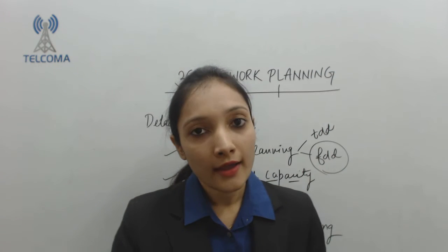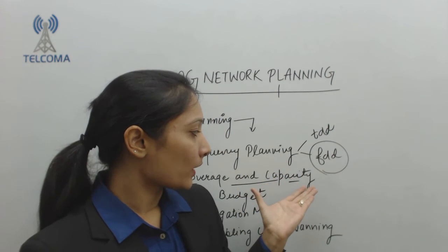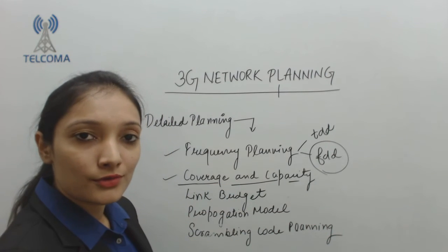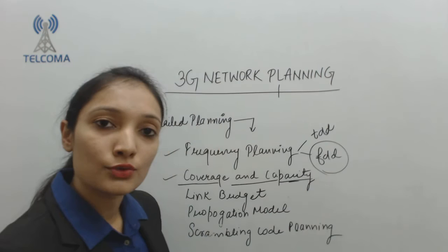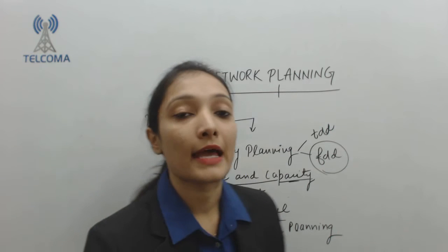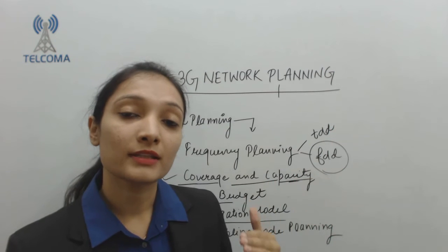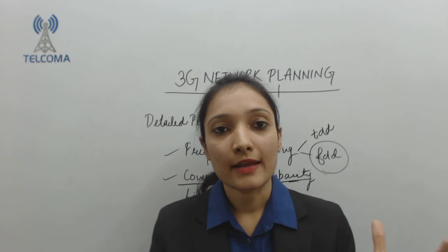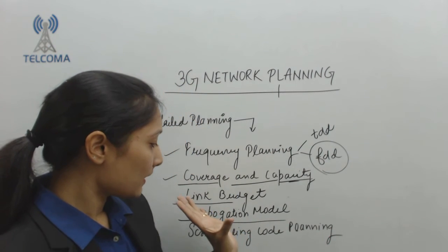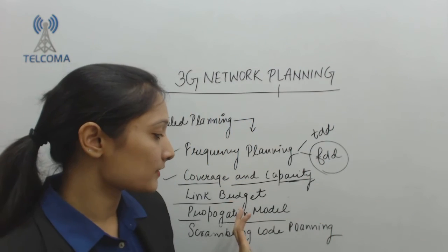Coverage and capacity are the two important issues to address when planning a network. Node B deployment must take care of its effective coverage area and the amount of traffic it will handle. Regarding propagation models — this is a mathematical formulation that describes the characteristics of radio wave propagation through a path. A good propagation model must be selected for deployment, such as the Okumura-Hata model.